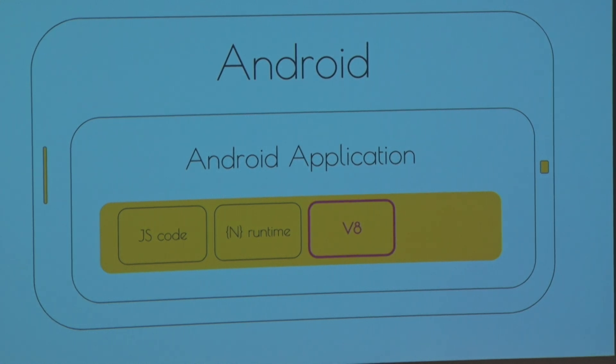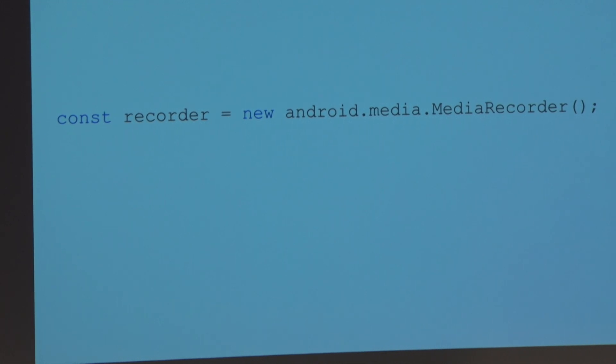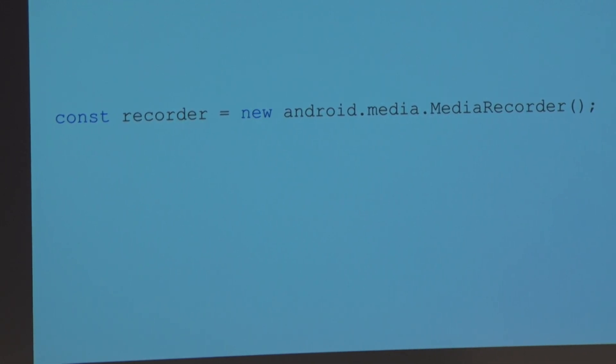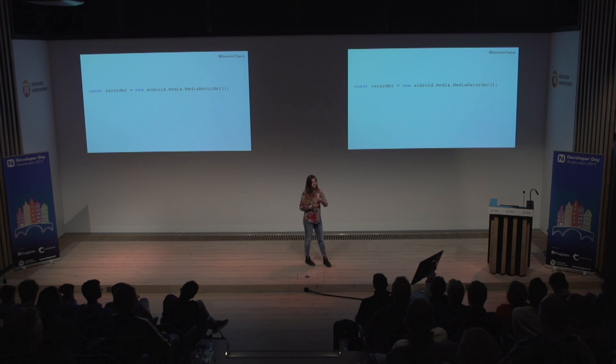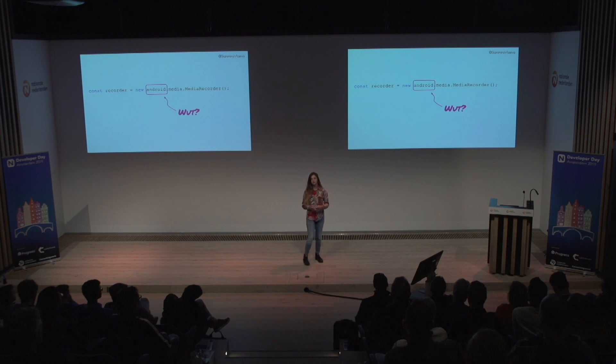The NativeScript runtime boots up V8, and V8 can execute the JavaScript code. If you try to execute a line like 'new Android.media.MediaRecorder()' — valid NativeScript code for Android — you get an instance of a media recorder. But why does that work? If you try to execute that in a Node context or in the browser, you get an error, because 'Android' is not a reserved word or global thing — it's not in the JavaScript language. So what trick does the NativeScript runtime use to enable us to use Android.media and so on?